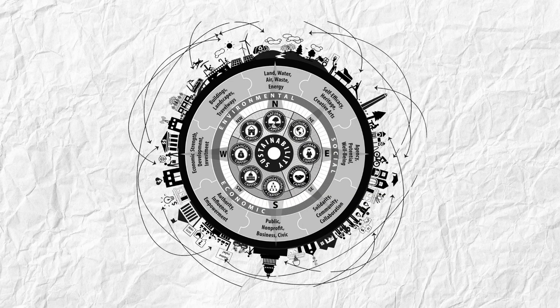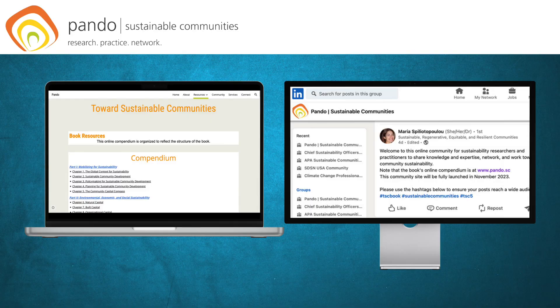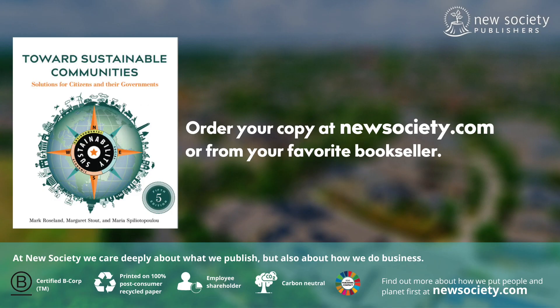Part three of the book explains the community change process and provides guidance for determining whether we are achieving our goals for places, prosperity, and people. Toward Sustainable Communities is a living book. It is accompanied by Pando.sc, an online compendium of tools, examples, and resources, and by Pando LinkedIn, a group where readers can connect with the authors and with each other. Toward Sustainable Communities is essential reading for anyone concerned about their communities and a sustainable future.